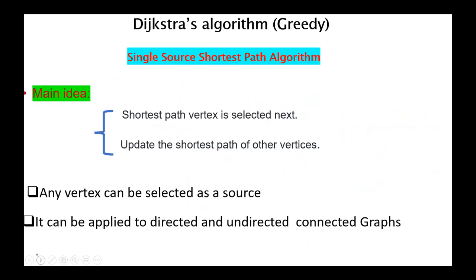There are several different algorithms that find a shortest path between two vertices in a weighted graph. We will present a greedy algorithm developed by the Dutch mathematician Dijkstra in 1959. Dijkstra's algorithm has many variations, but the most common one is to find the shortest path from the source vertex to all other vertices in the graph. So this variation is called the single-source shortest path algorithm. It's a greedy algorithm, and greedy strategy solves problems in stages by taking one step and considering one output at a time to get the optimal solution.